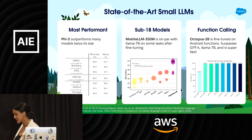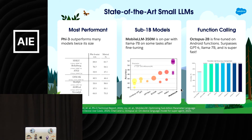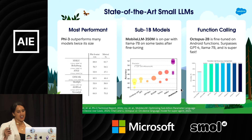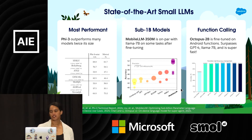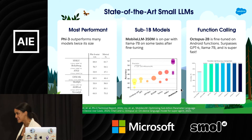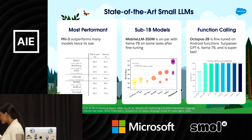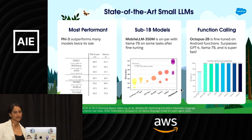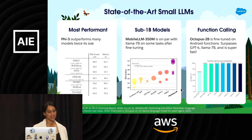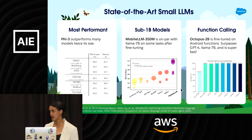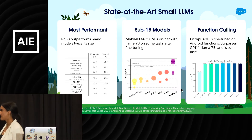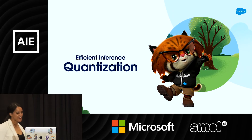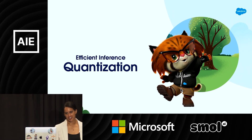Finally, I want to bring up a model that's really interesting for function calling: the Octopus model. It's a fine-tuned Gemma 2B, fine-tuned on Android tasks. A 2B model — after fine-tuning, it's outperforming GPT-4 and Llama 7B on these Android tasks. Super promising. Definitely check out these small LLMs; they have a ton of potential. Now let's move to our next topic: quantization.